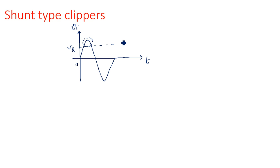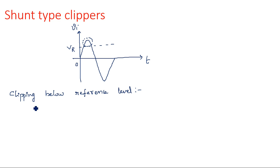In the previous video I explained the operation of the shunt type clipper for clipping above the reference level. Now we focus on clipping below the reference level. You should understand the difference between shunt type and series type clippers: whenever the diode is in parallel with the output voltage, that configuration is a shunt type clipper; if the diode is in series with the output, it is a series type clipper. In the shunt type clipper there are two configurations: clipping below reference level and clipping above reference level.